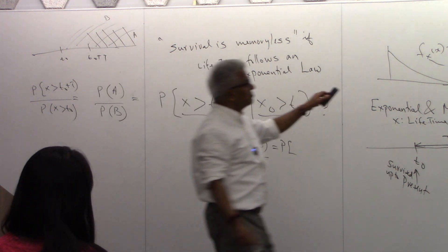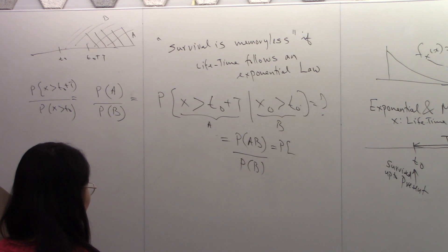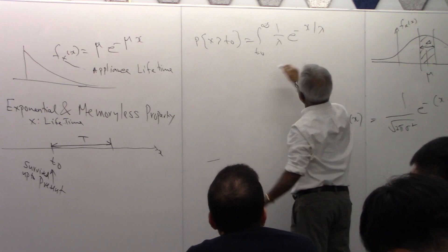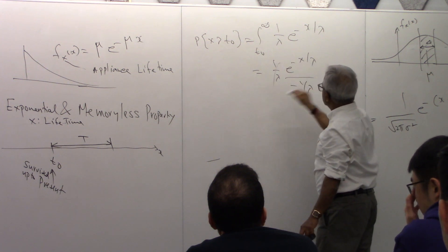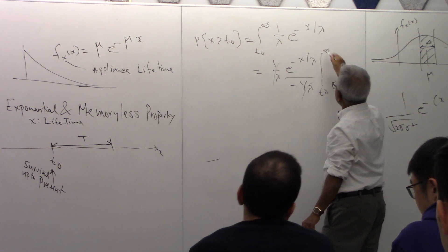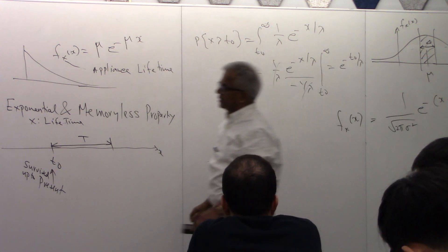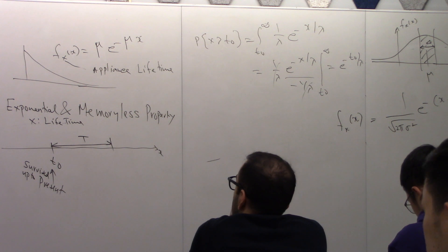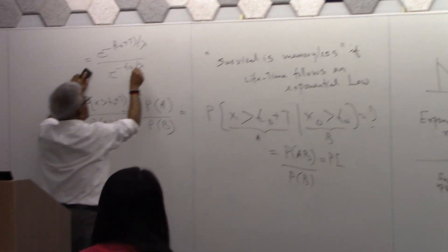Now let's compute the distribution function for this. So we want probability of x greater than t naught. That's going to be integral from t naught to infinity, one over lambda, e raised to minus x over lambda. So that's e raised to minus t naught over lambda. Let me substitute it here. This will be e raised to minus t naught plus t over lambda, over e raised to minus t naught over lambda.